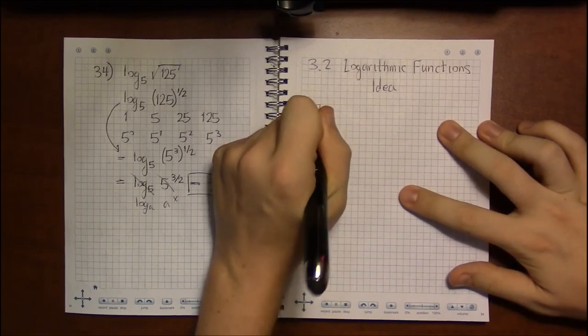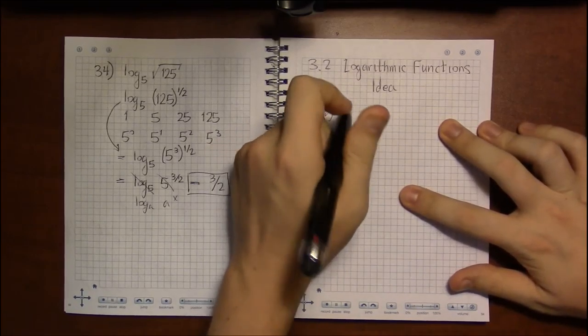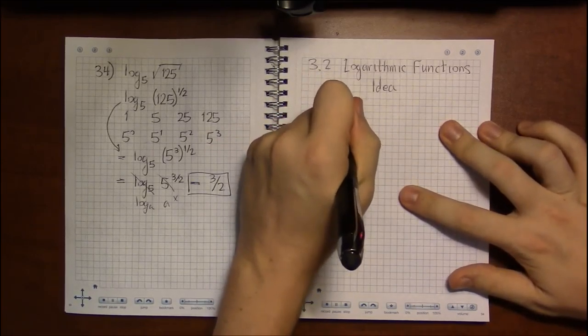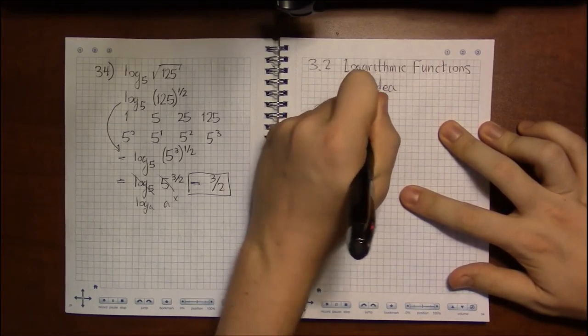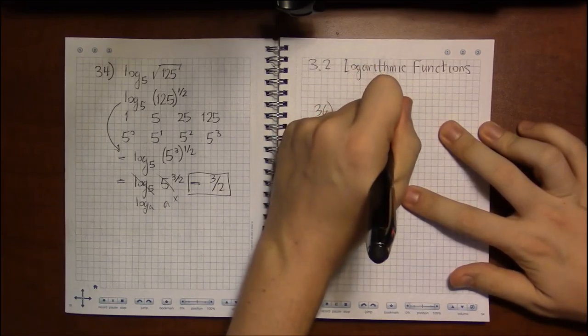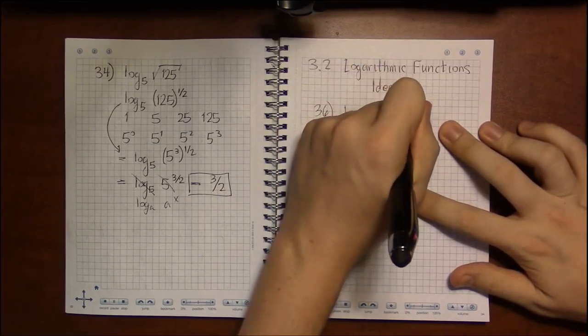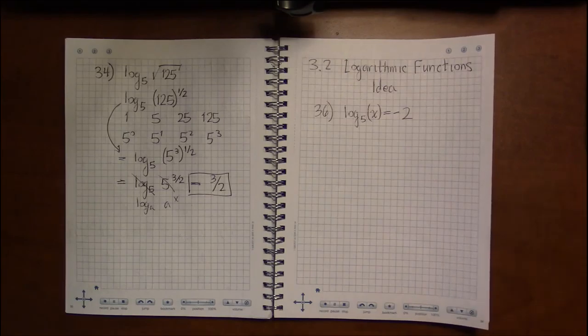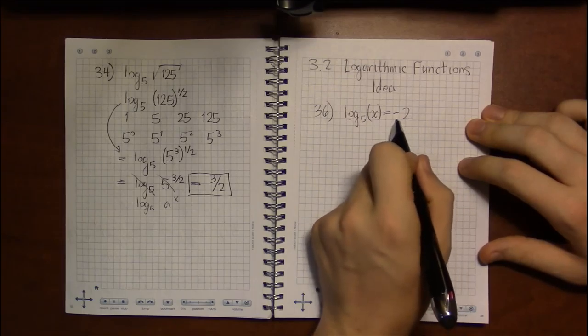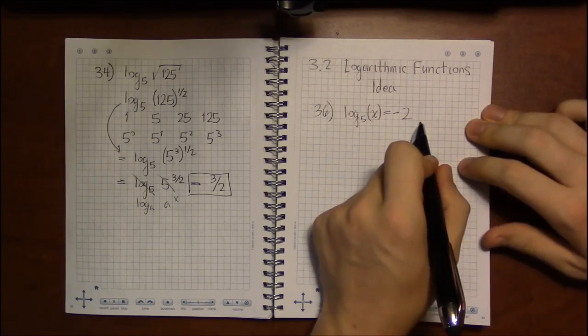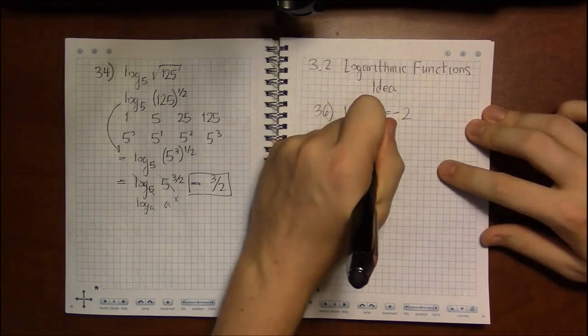I want to talk about solving very simple logarithmic equations. So something like log base 5 of x is equal to minus 2. Here, when you just have a logarithm on one side, and that's it, and a number on the other, all you have to do is convert this to an exponential.